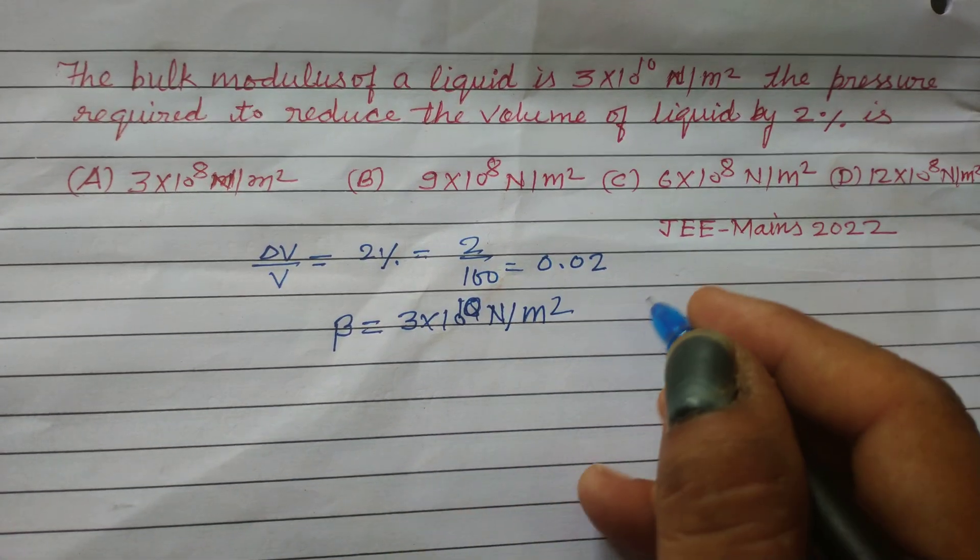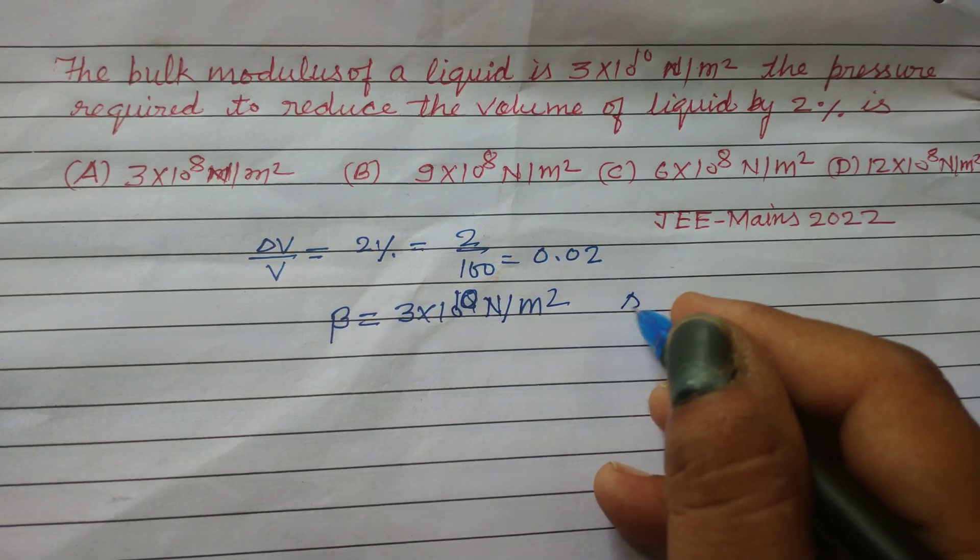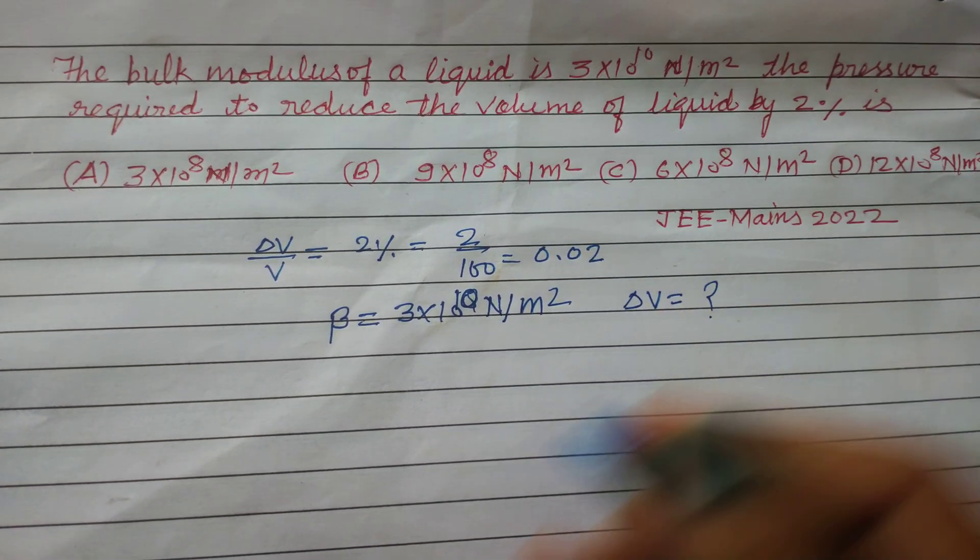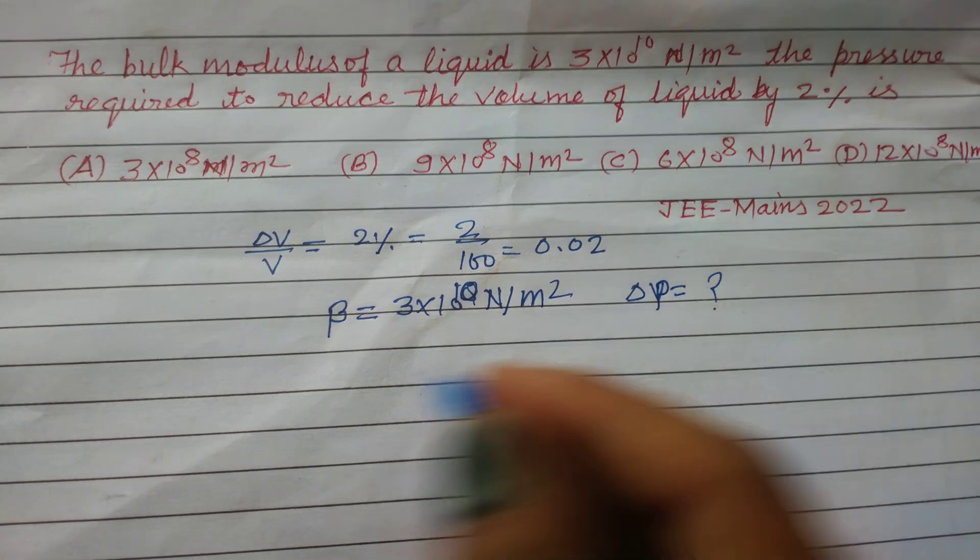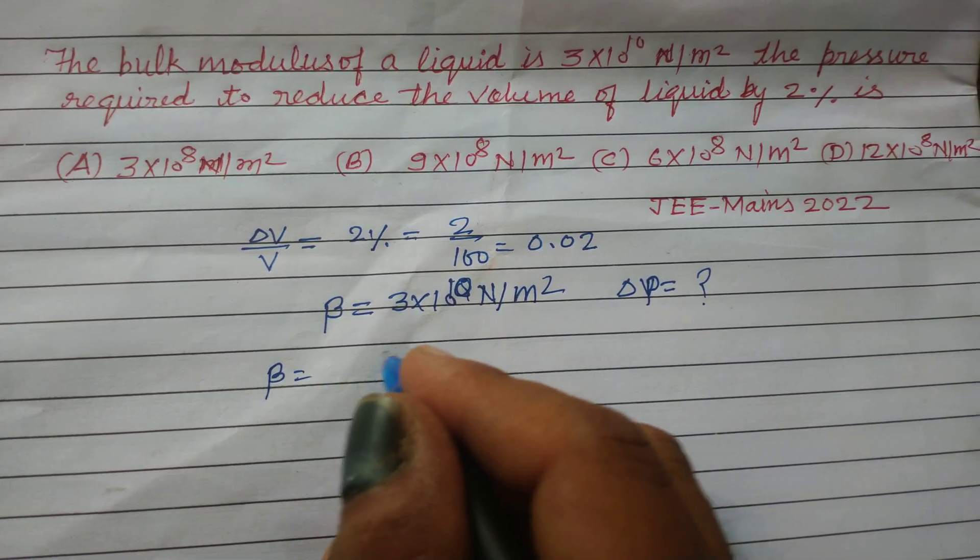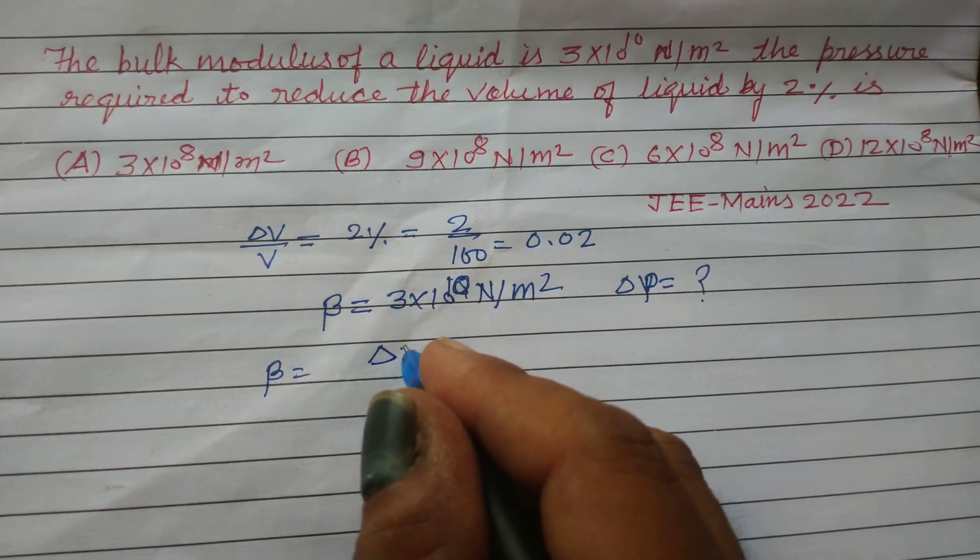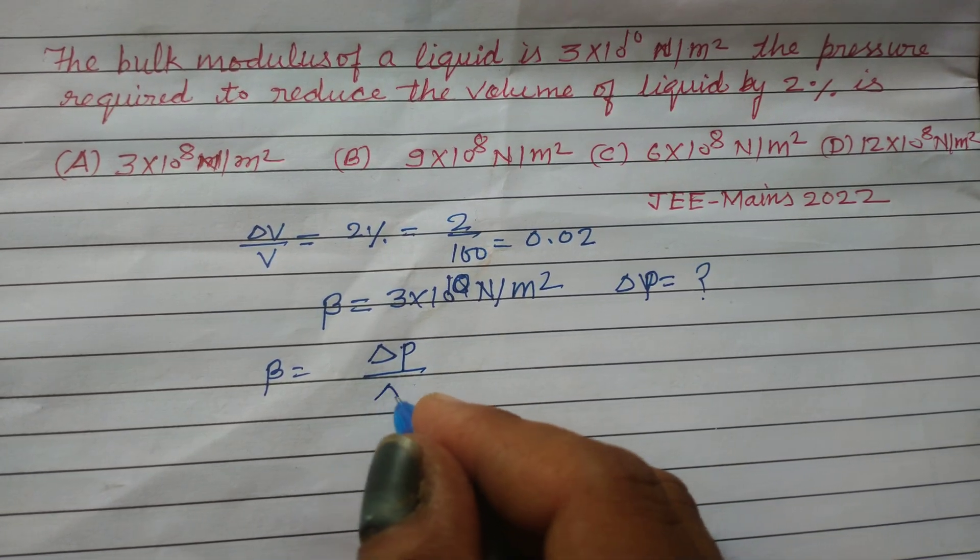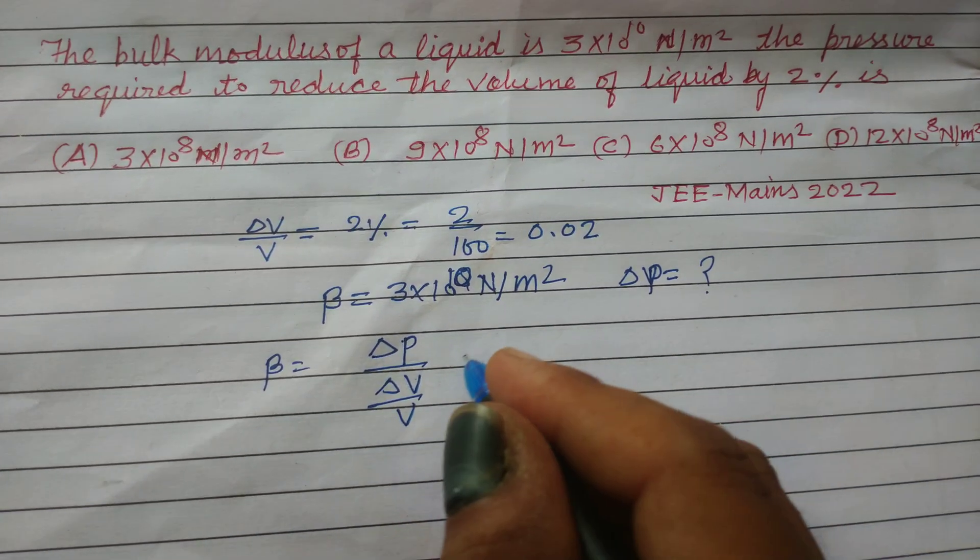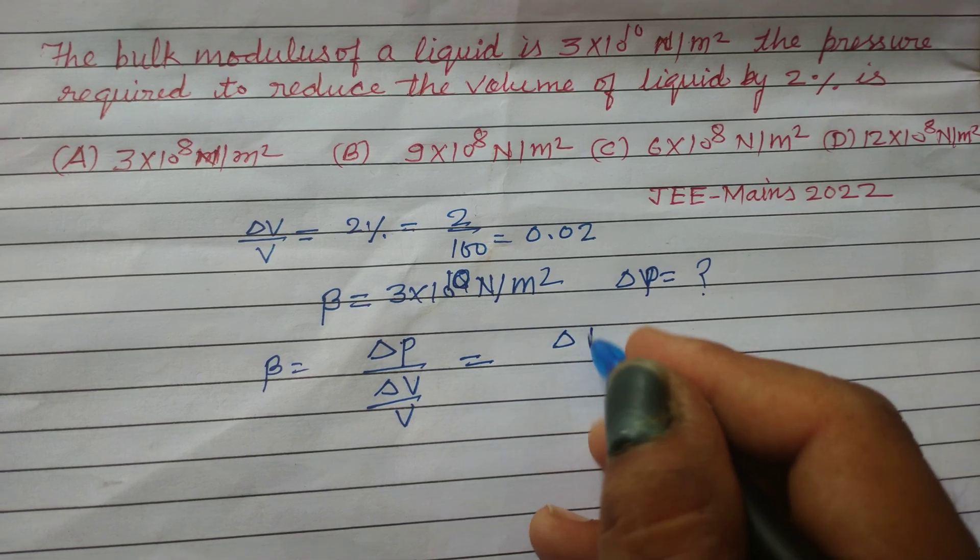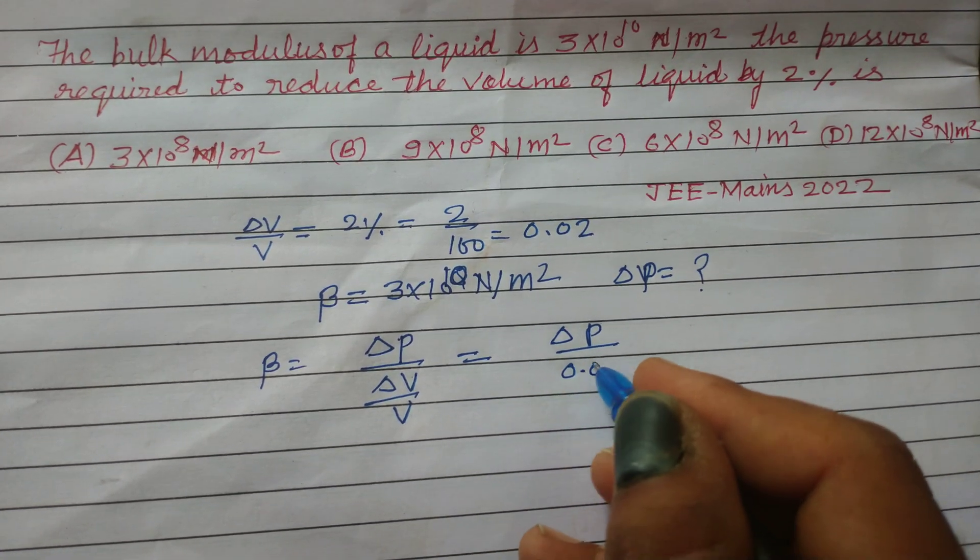And here we require pressure ΔP. So β equals stress over strain, ΔP divided by ΔV/V. So ΔV/V is 0.02.